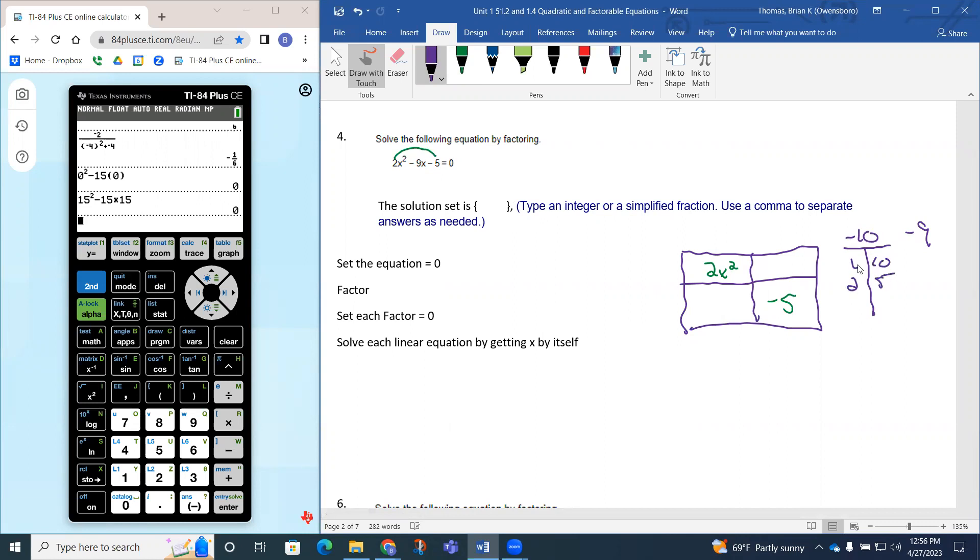This 1 and 10 looks pretty good to get this 9. To get negative 10, one of these has to be negative, but to get negative 9 when adding, the bigger number would have to be negative. So 1 times negative 10 is negative 10, and 1 plus negative 10 is negative 9, so that checks out.